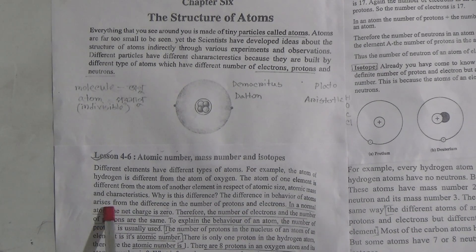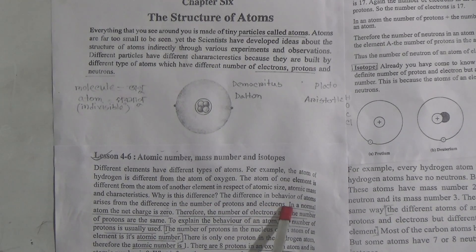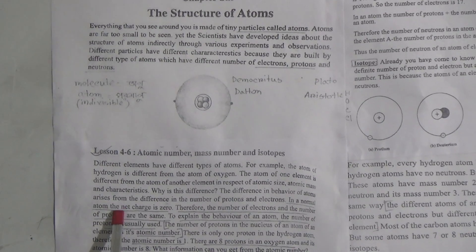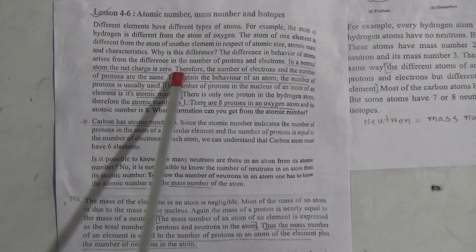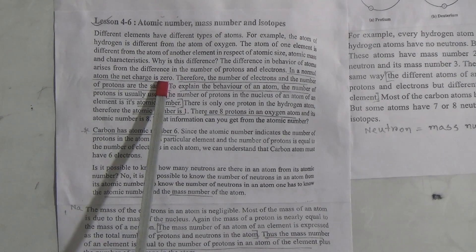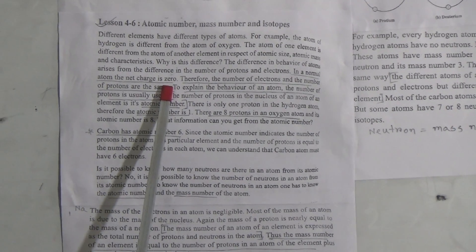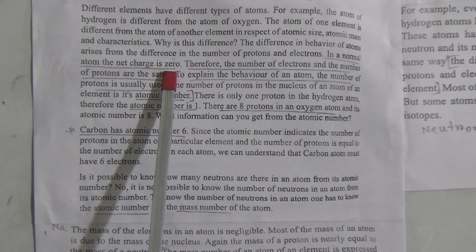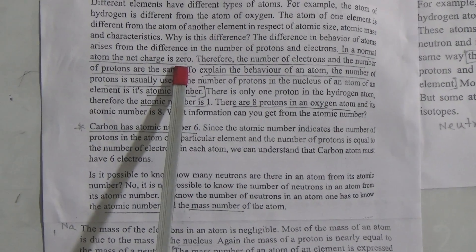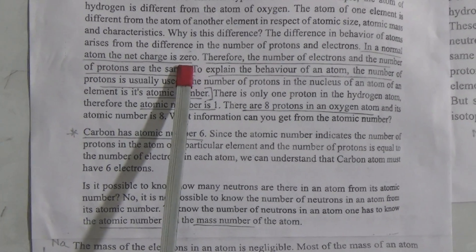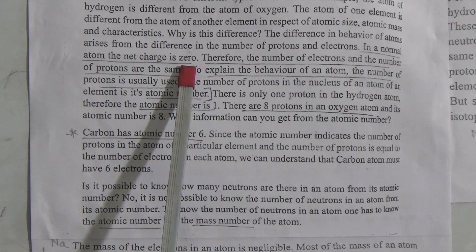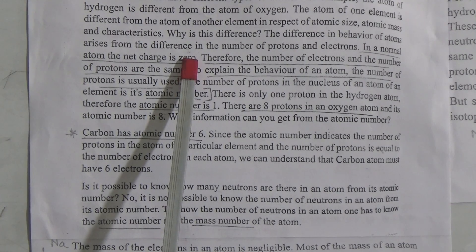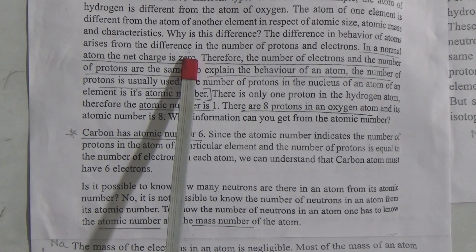The difference in behavior of atoms arises from the difference in the number of protons and electrons. In a normal atom, the net charge is zero. That means the proton has a positive charge and the electron has a negative charge, and in a normal atom the number of electrons and the number of protons is always the same. That is why the net charge of a normal atom will be zero.